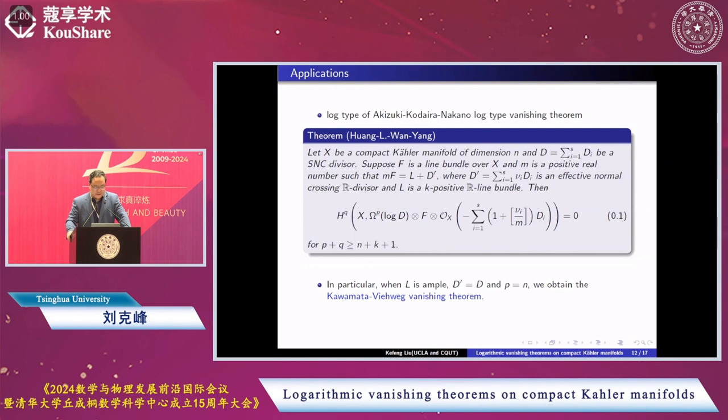In particular, when L is always ample and D' equals D and P equals n, we get Kawamata-Viehweg vanishing theorem as a special case.